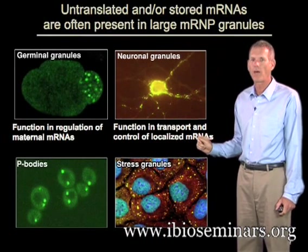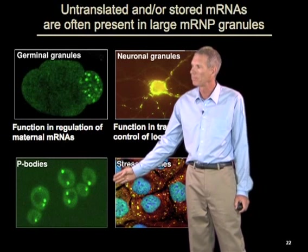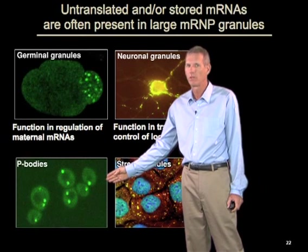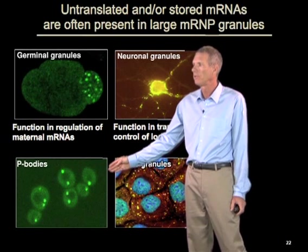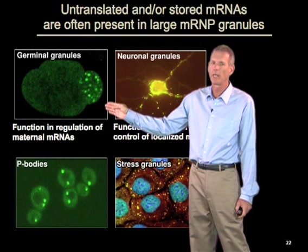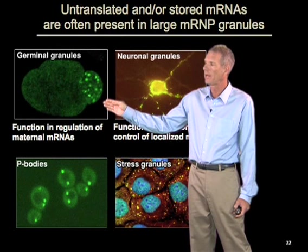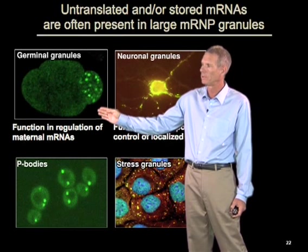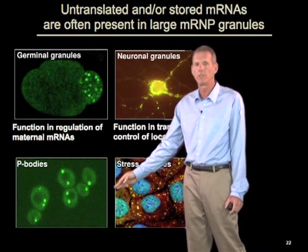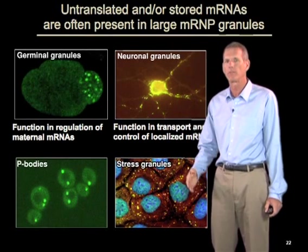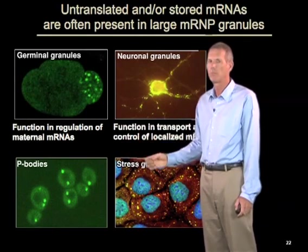These repressed mRNAs often end up in large RNA protein granules in the cytoplasm. Repressed RNAs often end up in structures found in somatic cells — in yeast, humans, plants, C. elegans, every eukaryote looked at so far — which are called P-bodies. Similarly, mRNAs that are repressed in germ cells, where maternal mRNAs are made by the mother and deposited in the oocyte to be used in the embryo, are stored in what are called germinal granules. As I'll talk about in my second lecture, these different types of RNA granules are all related to each other and use a common set of RNA binding proteins to regulate the translation and degradation of many of these mRNAs.